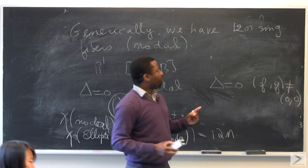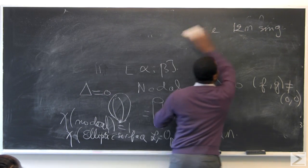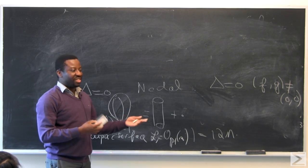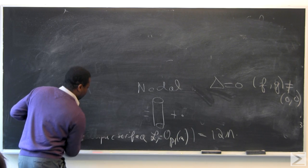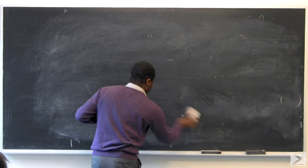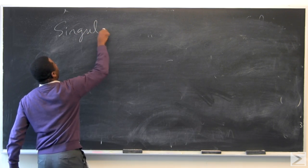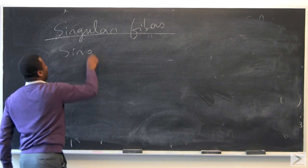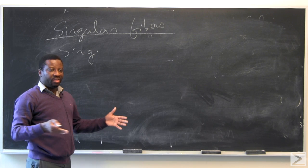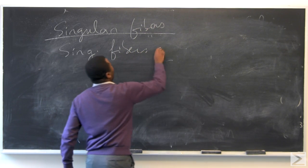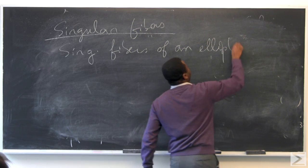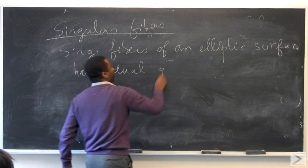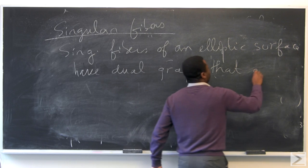Before giving more details, I'll give some motivation for why Monica — a physics student — is doing this. The singular fibers of an elliptic fibration are of a type that is seen all over mathematics: the ADE Dynkin diagram. In the case of surfaces, they have a dual graph that is an affine ADE Dynkin diagram.